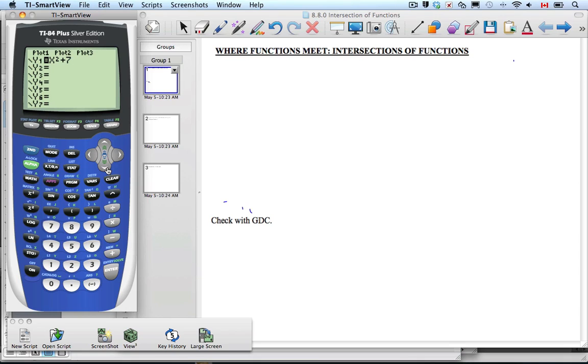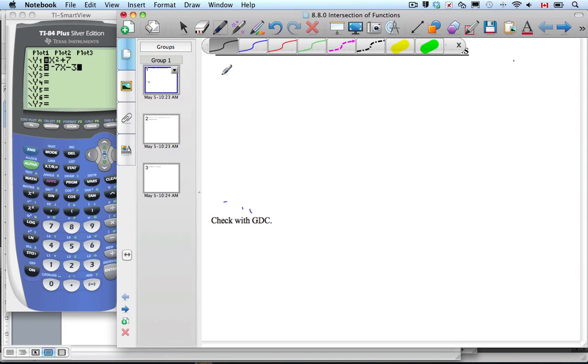I'm just going to make up two random functions. I'm going to make one y equals x squared plus 7, and I'm typing it into the calculator, and the other one's going to be y equals negative 7x minus 3. So if I write these two over here, let me click on that first. We have the equation y equals x squared plus 7, and y equals negative 7x minus 3.